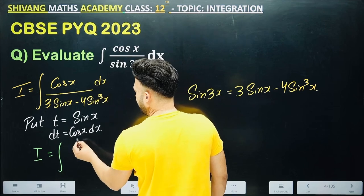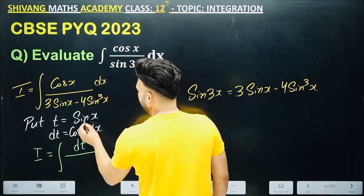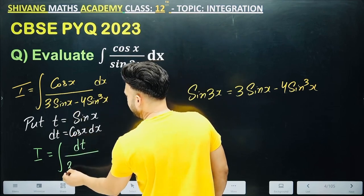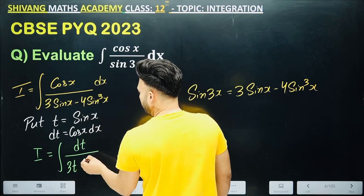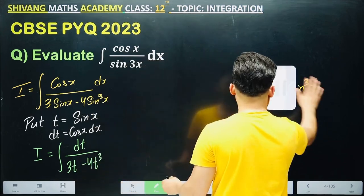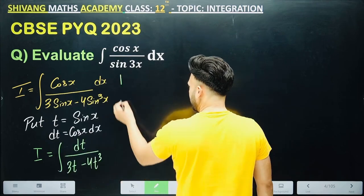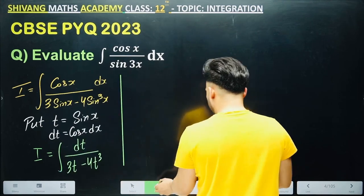So look, instead of cos x dx, we took dt. Sin x as t. 3t minus 4t cubed. Now how will we integrate it? We have understood till here. Now how will we integrate it?